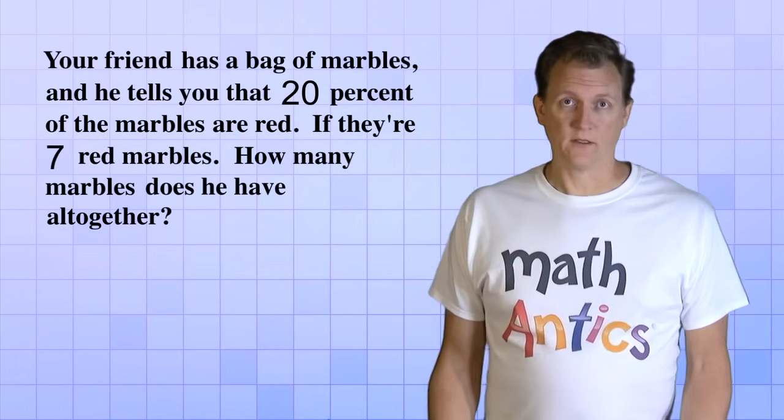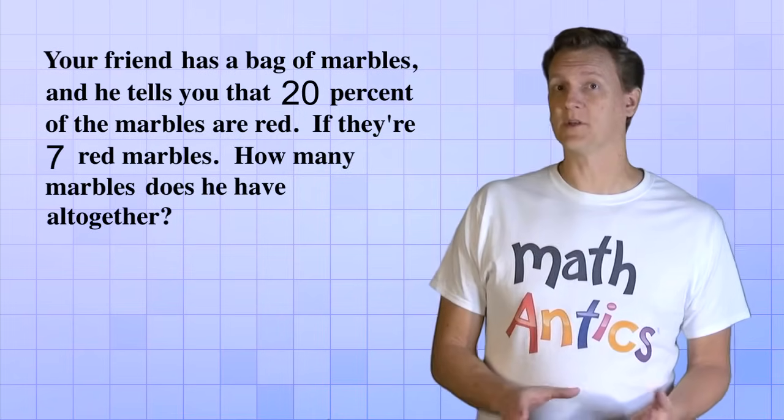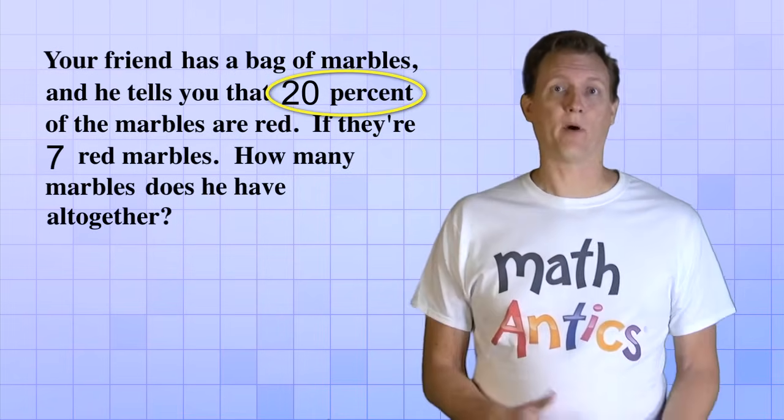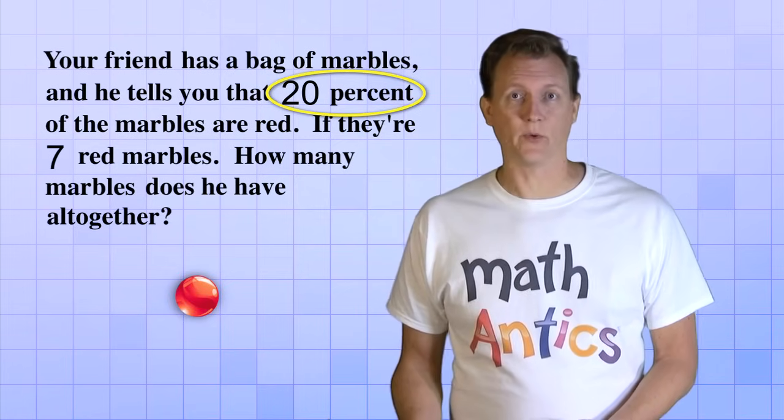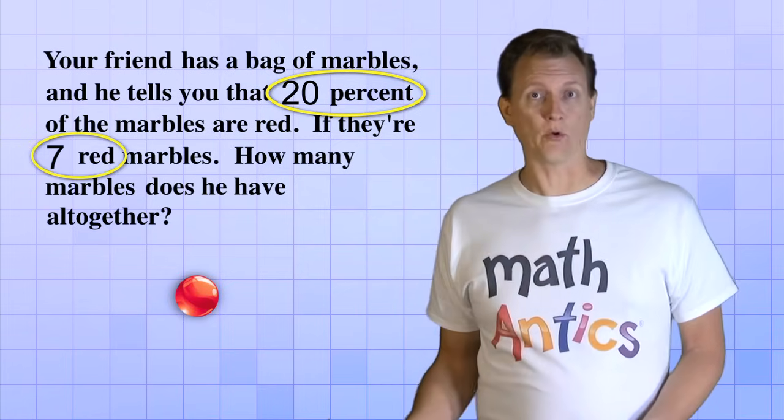And another way that we can tell is by the numbers that we are given. In this problem, we know that the percent is 20, and we're also told that part of the marbles are red, so we know that the part is 7, so that means that it must be the total that's missing.